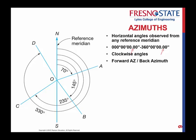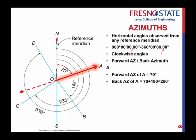You can have a forward azimuth and a back azimuth. Let's take example A: forward azimuth is 70 degrees — measured 70 degrees from the reference line. The back azimuth goes 180 degrees in the opposite direction. So if I want to know the back azimuth, I take my existing 70 degrees, add 180, giving me an overall angle of 250 degrees.